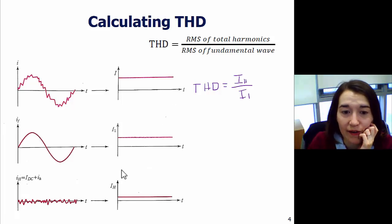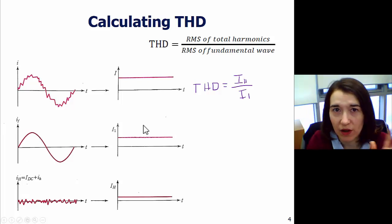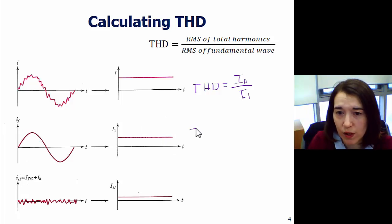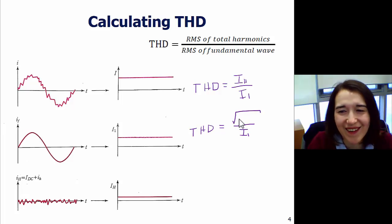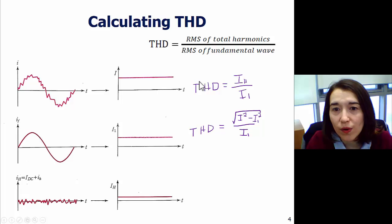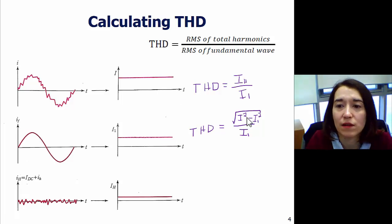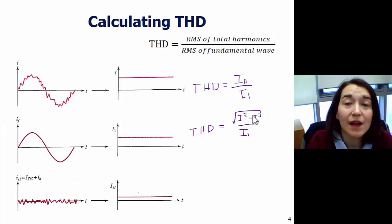We can think of what IH is in terms of the other two. If we go back to our definitions of IRMS, we can rewrite the top part. We can rewrite IH as the square root, because we're dealing with RMS values, so we have to square a bunch of things. We can think of it as the total value here, I squared minus I1 squared. Think of this as the total minus the fundamental, which you're taking out, is the rest. So the rest is IH.